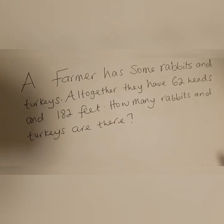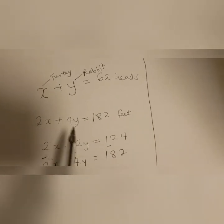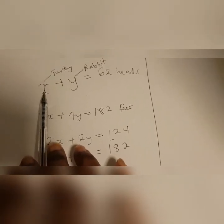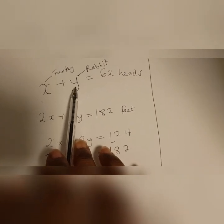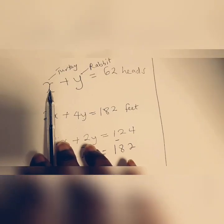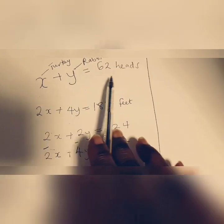This question can be written as an equation. Why? Because if we have the turkey's head to be one and the rabbit's head to be one, and rabbits can only have one head and turkeys can only have one head, if you add these heads together you get 62 altogether.